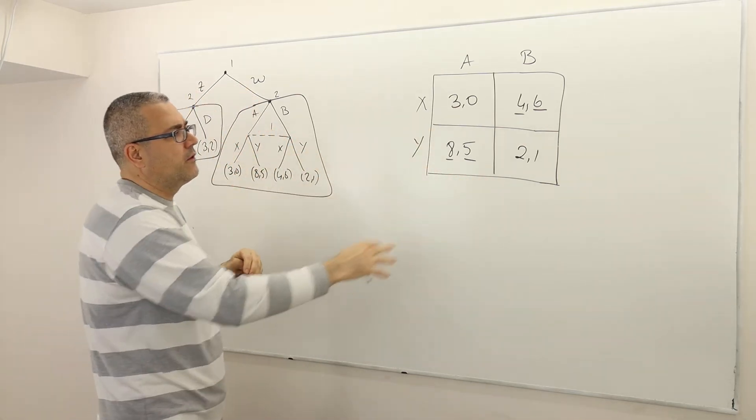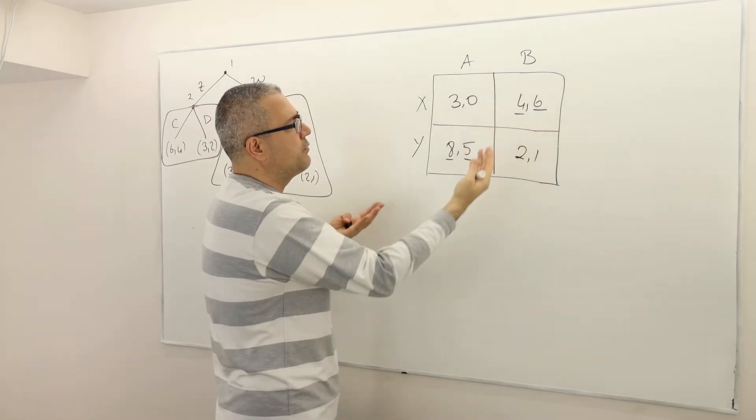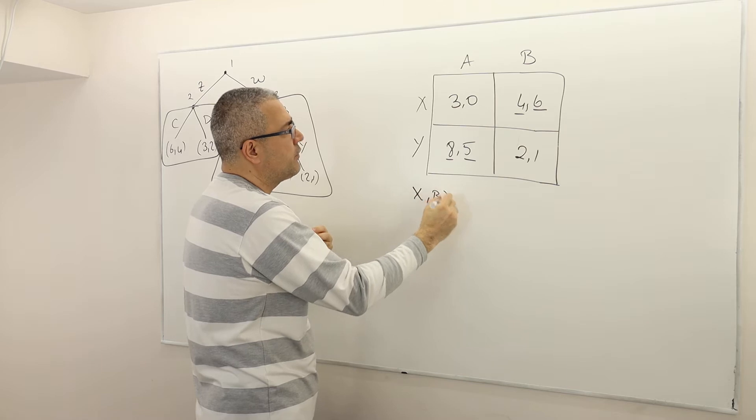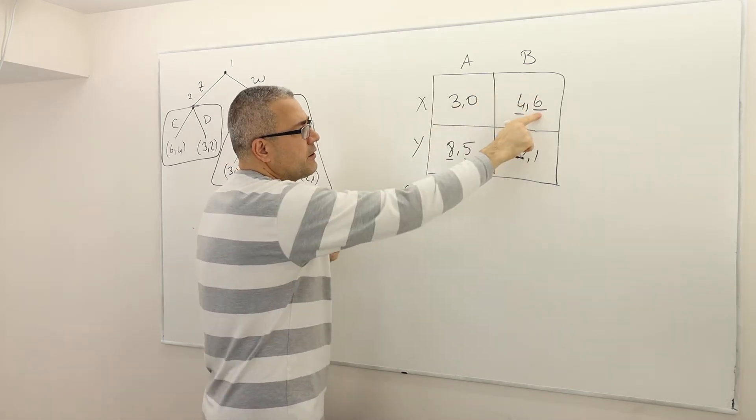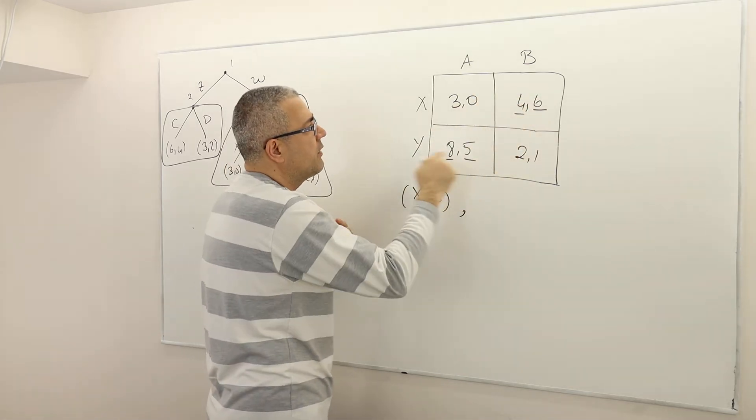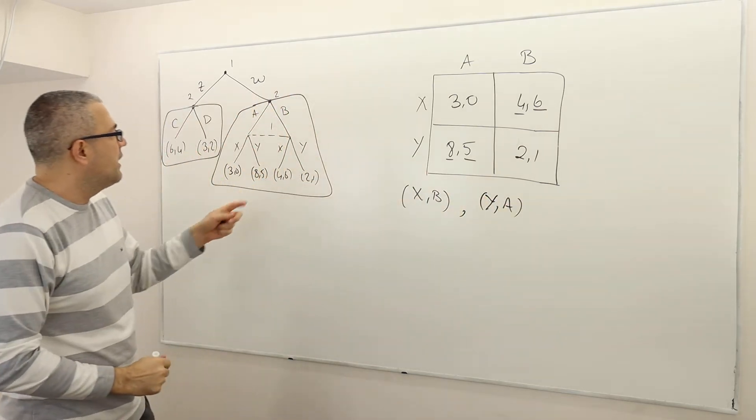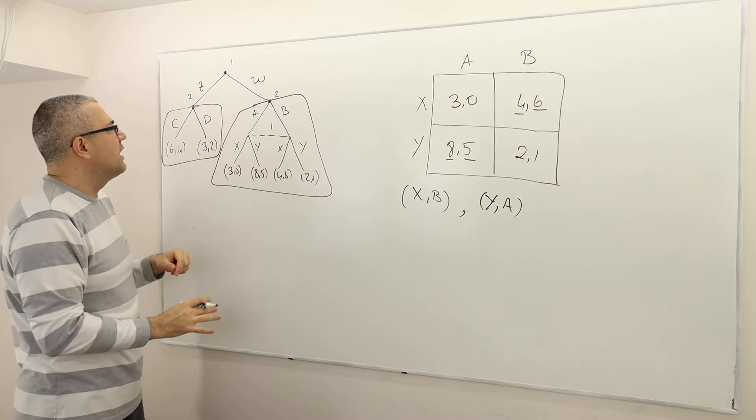Alright, I put the payoffs, I found the Nash equilibrium strategies. There are two pure Nash equilibrium strategies. The first one is X,B corresponding to payoff 4,6. The other one is Y,A corresponding to the payoff 8,5. Alright, so this part of the game is done.